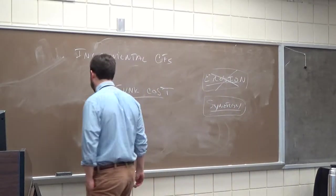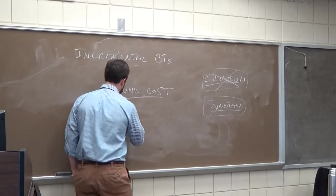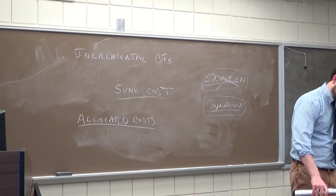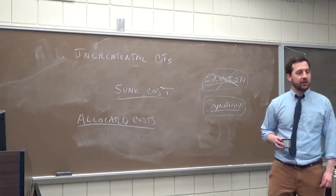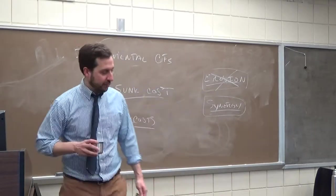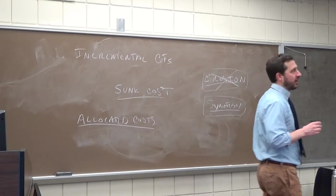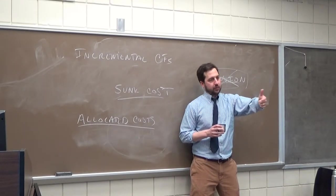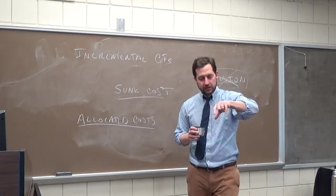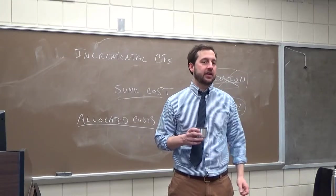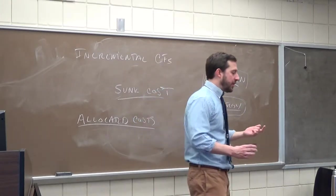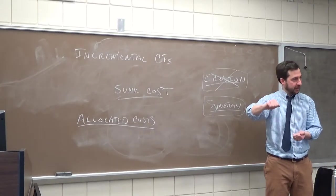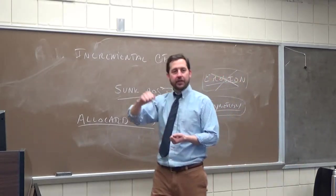Here's an important one that will be on the exam: allocated costs. This is something that gets messed up quite often. Let's say you're thinking of opening a new factory — some project that will require putting 15 more engineers at your headquarters. Would it be okay to say: because of this project there are 15 more engineers, and these engineers will use 10% of the cafeteria, so I'll allocate 10% of the cafeteria cost to this project?